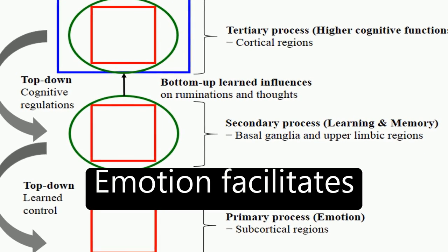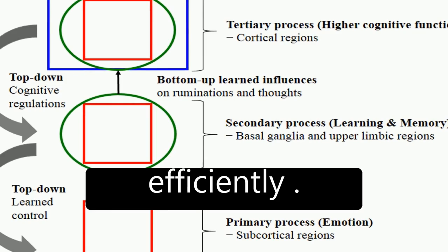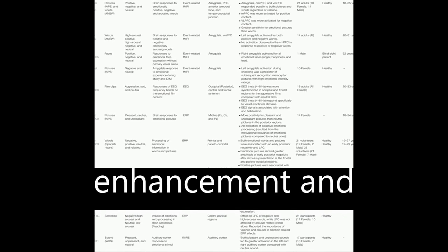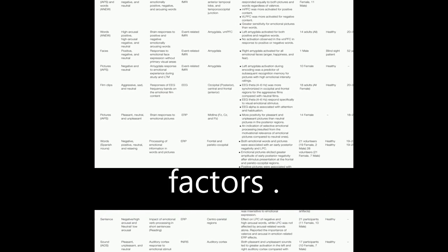Emotion facilitates encoding and helps retrieve information efficiently. However, the effects of emotion on learning and memory are not always univalent, with studies reporting both enhancement and impairment, depending on factors.